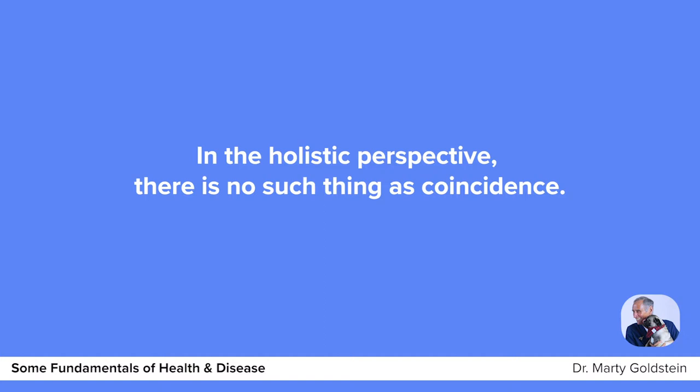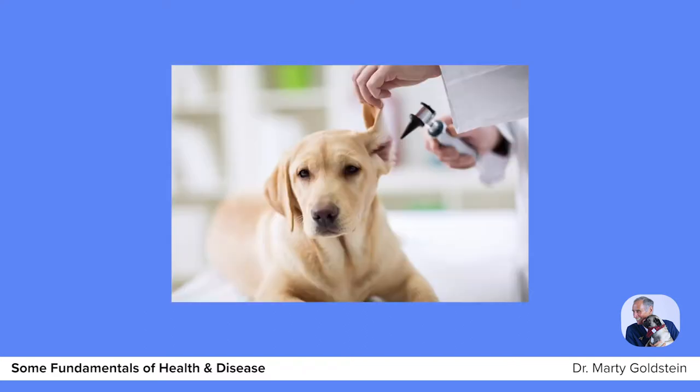When I graduated Cornell in 1973, approximately one out of 10 dogs got cancer and it was always a disease of the old. Now the latest statistic is approximately one out of every 1.61 dogs in the United States will get cancer. We must look at what cancer is — does it actually exist as an entity, something out there that attacks the body? No.